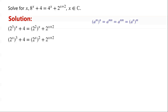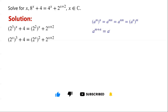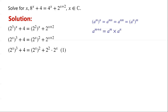2 squared all to the power of x is equal to 2 to the power of x, all squared. We know that a to the power of m plus n equals a to the power of m times a to the power of n. By applying this, 2 to the power of x plus 2 can be written as 2 squared times 2 to the power of x.